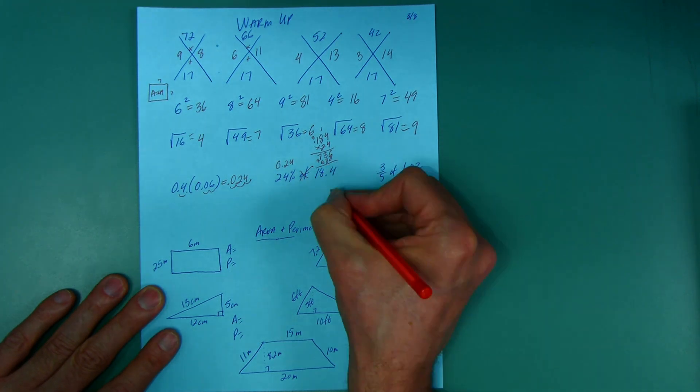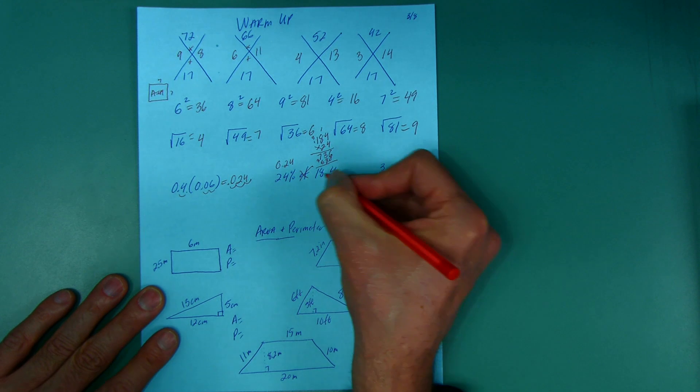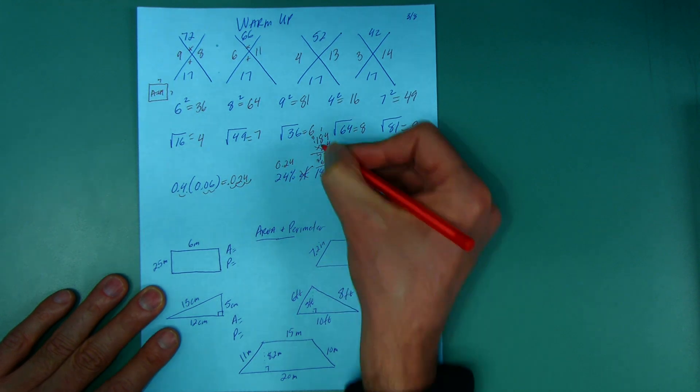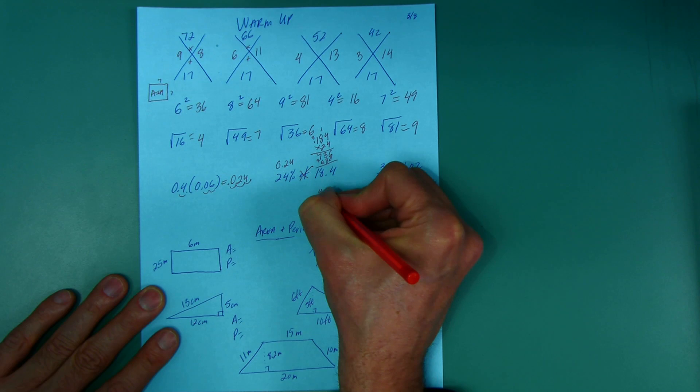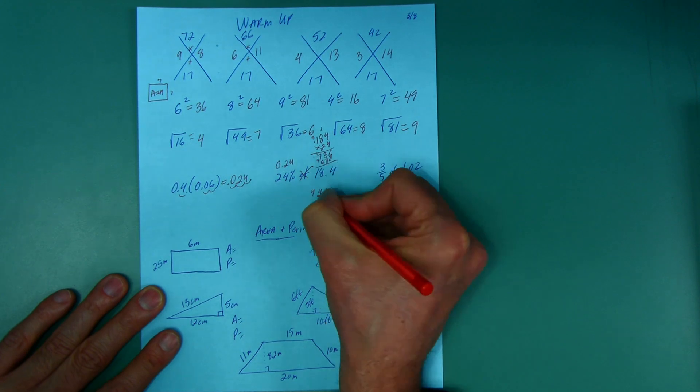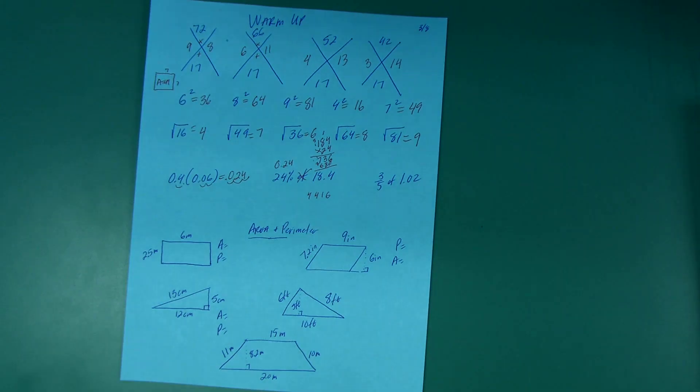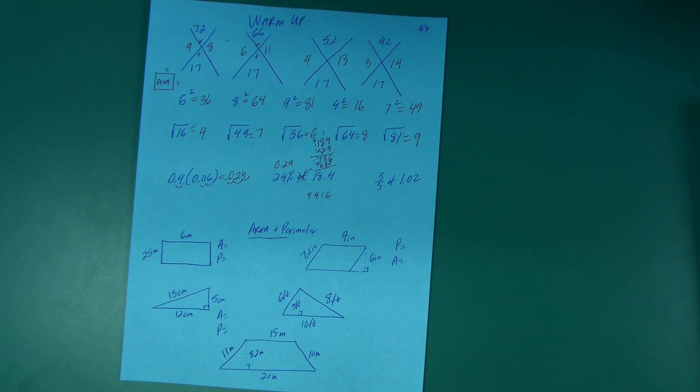So I got a little messy here. I'm going to add this and put the answer down here. 6 and 0, 8 and 3, 7, 1 and 6 is 14. OK, so 4,416.